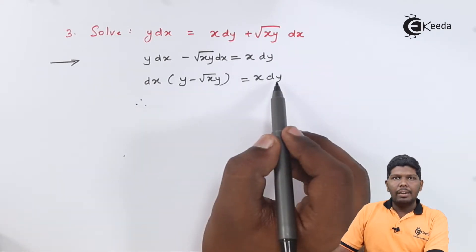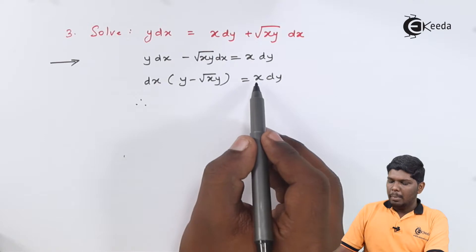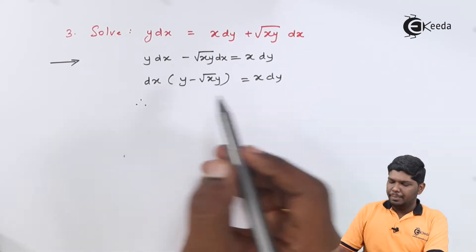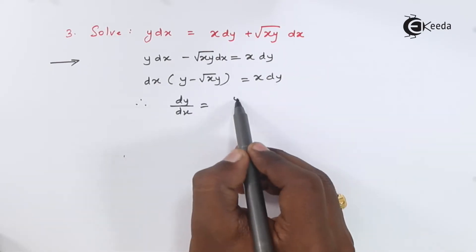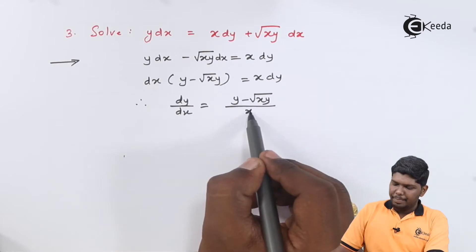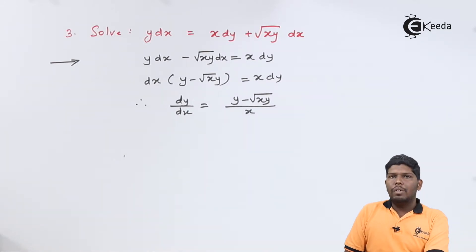Now, you can directly find the value of dy by dx by transferring x on the left-hand side. Once we get the value of dy by dx, let us put y as vx and further differentiate it with respect to x.